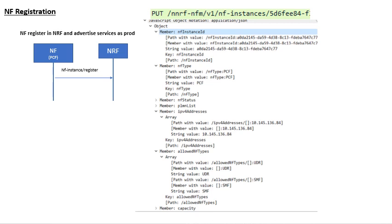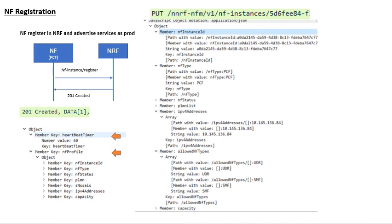In this case we have taken the example of PCF, which will send the NF instance register message to the NRF. NRF will store this NF profile into the NRF database, maintain the status of the network function as registered, and respond back to the producer — which is PCF — with a heartbeat timer and the NF profile which is stored in the database, in the form of a 201 Created response.